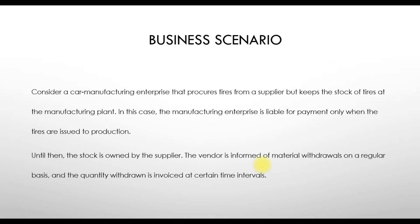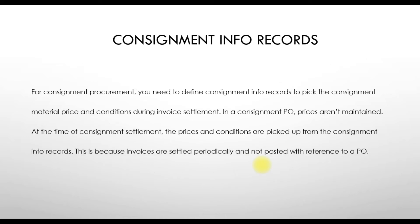The most important thing to remember when doing the consignment procurement cycle in SAP is the consignment info record — similar to the purchase info record. You need to define the consignment info record to pick the consignment material price and conditions during invoice settlement. In a consignment purchase order, prices are not maintained at the time of the order. Instead, prices and conditions are picked up from the consignment info record during settlement, because invoices are settled periodically and not posted with reference to a purchase order.